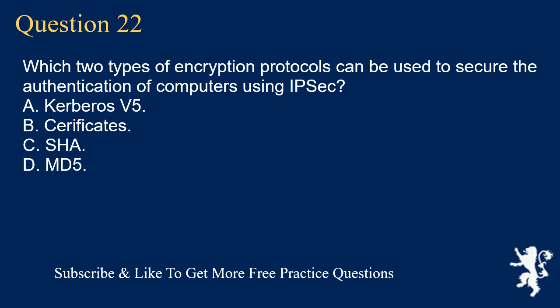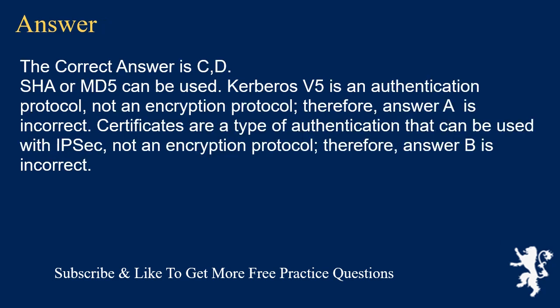Question 22. Which two types of encryption protocols can be used to secure the authentication of computers using IPsec? A. Kerberos V5. B. Certificates. C. SHA. D. MD5. The correct answers are C and D. SHA or MD5 can be used. Kerberos V5 is an authentication protocol, not an encryption protocol. Therefore, answer A is incorrect. Certificates are a type of authentication that can be used with IPsec, not an encryption protocol. Therefore, answer B is incorrect.